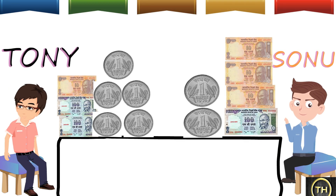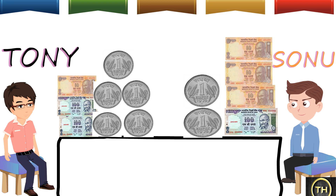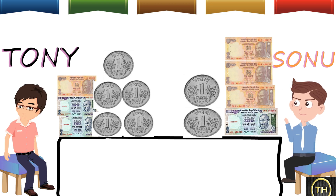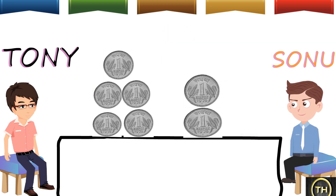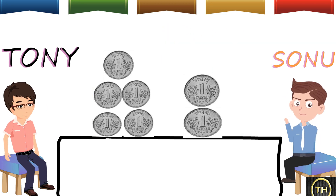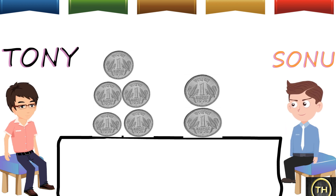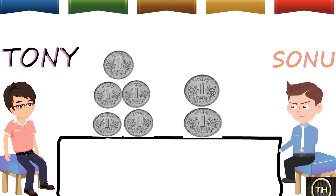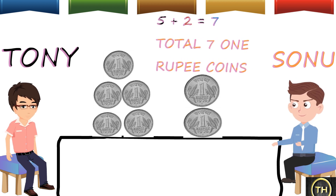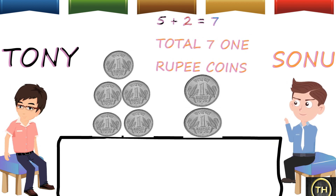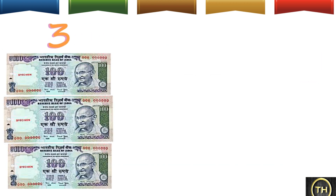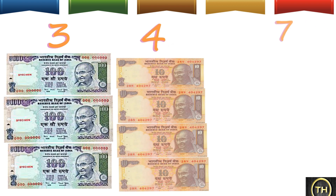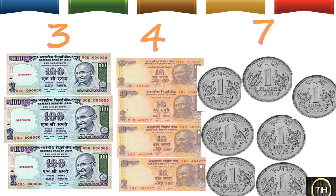How many one rupee coins do they have altogether? Let us count the one rupee coins. Tony has 5 one rupee coins and Sonu has 2 one rupee coins. So 5 plus 2 is equal to 7. There are a total of 7 one rupee coins altogether. Which means there are 3 hundred rupee notes, 4 ten rupee notes and 7 one rupee coins altogether.